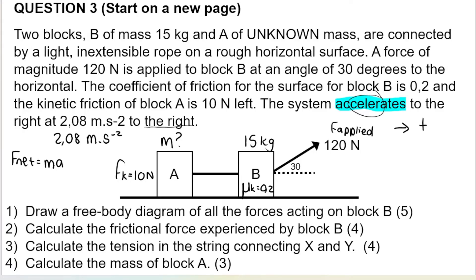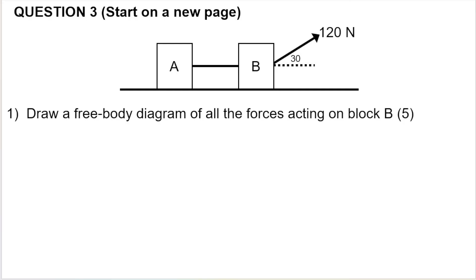The first question asks us to draw a free body diagram for all the forces acting on block B. Please take note this question is worth five marks — if the question's worth five marks, you need five forces, five arrows. When we draw a free body diagram, we represent the object, which in this case is B, as a dot — always a dot. Draw your dot nice and big.